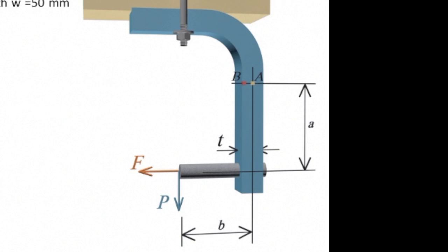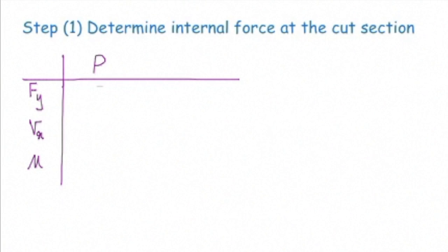To determine if the moment is clockwise or counterclockwise, we use the right-hand rule: put the fingers in the direction of the force, bend your fingers toward the direction that the force moves toward the cut section, and the thumb shows the direction of the moment. Doing this, the fingers bend counterclockwise and the thumb goes out of the plane. The second move — moving P up to the cut section — does not cause any moment, and that force becomes axial. So for P: axial force = P, shear force = 0, and moment = negative P times B (clockwise is negative).